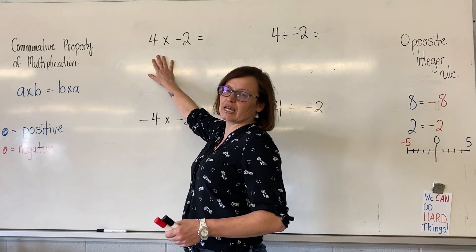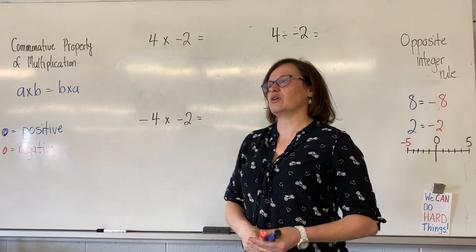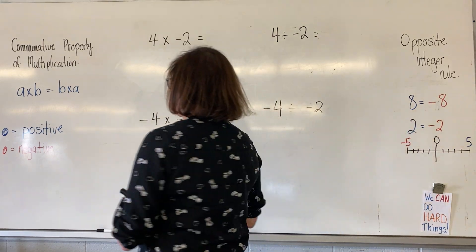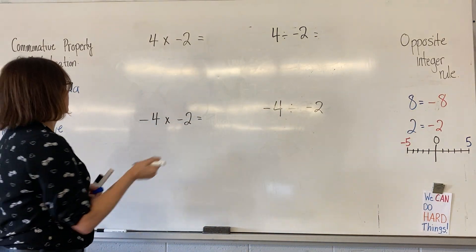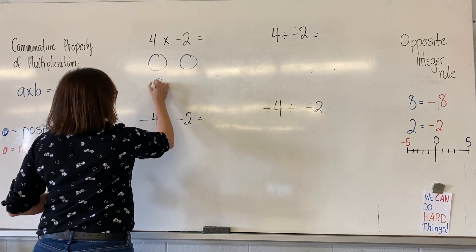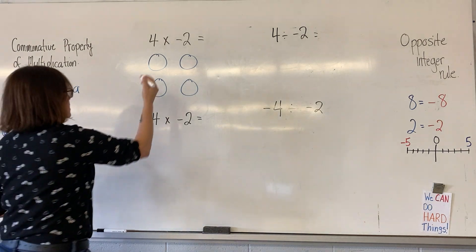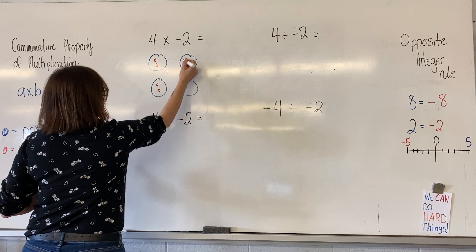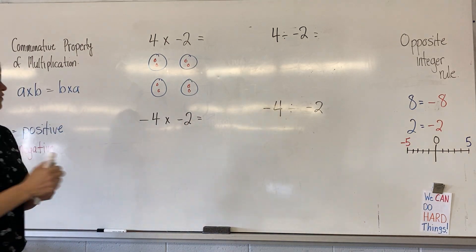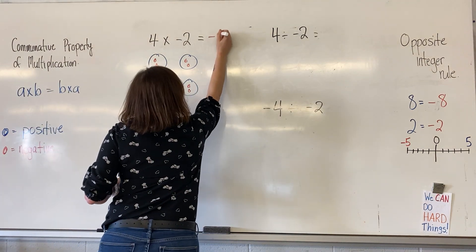So multiplication first. Four multiplied by negative two. We know multiplication talks about having groups of certain things in it. So right now I have four groups — my red is negative, my blue is positive. I have four groups, and this is how I represent it, with two negatives in each. If I add all of those together, I have eight negatives. So negative eight.